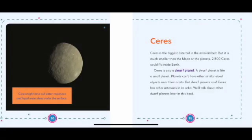Ceres might have old water volcanoes and liquid water deep under the surface. Ceres is the biggest asteroid in the asteroid belt, but it's much smaller than the Moon or the planets. 2,500 Ceres could fit inside the Earth. Ceres is also a dwarf planet. A dwarf planet is like a small planet. Planets can't have other small-sized objects near their orbits, but dwarf planets can. Ceres has other asteroids in its orbit. We'll talk about other dwarf planets later in this book.